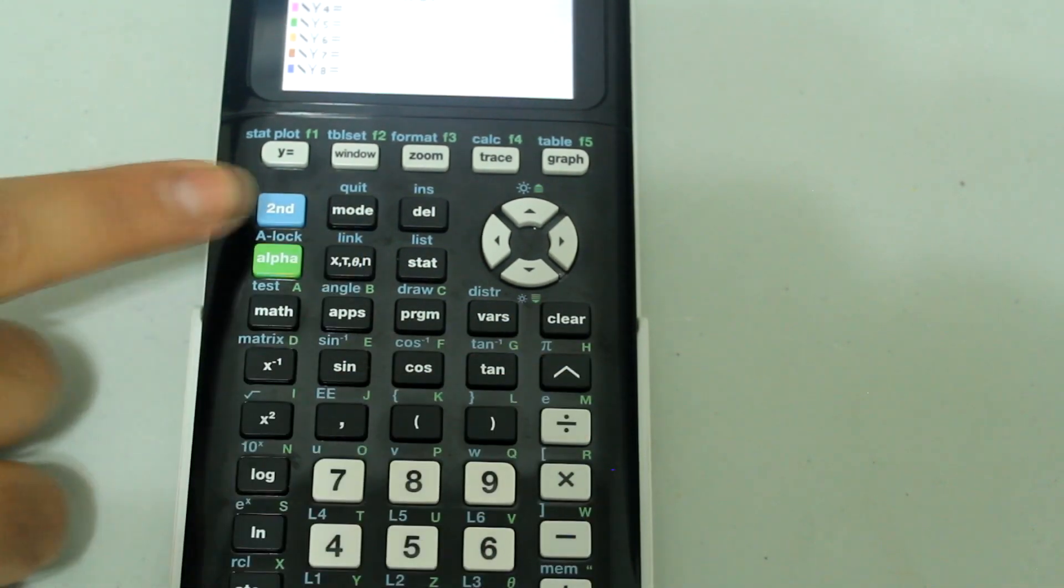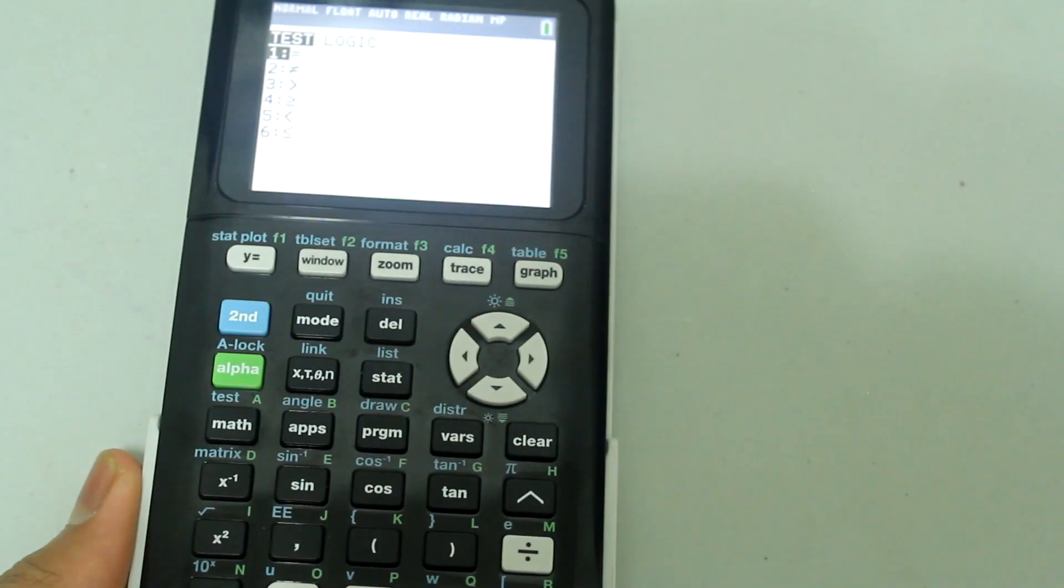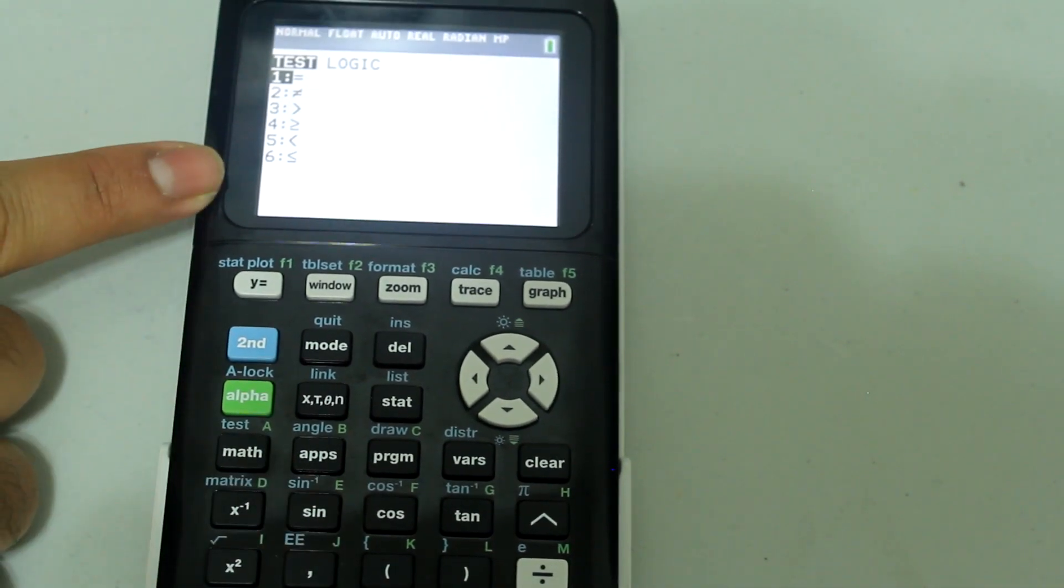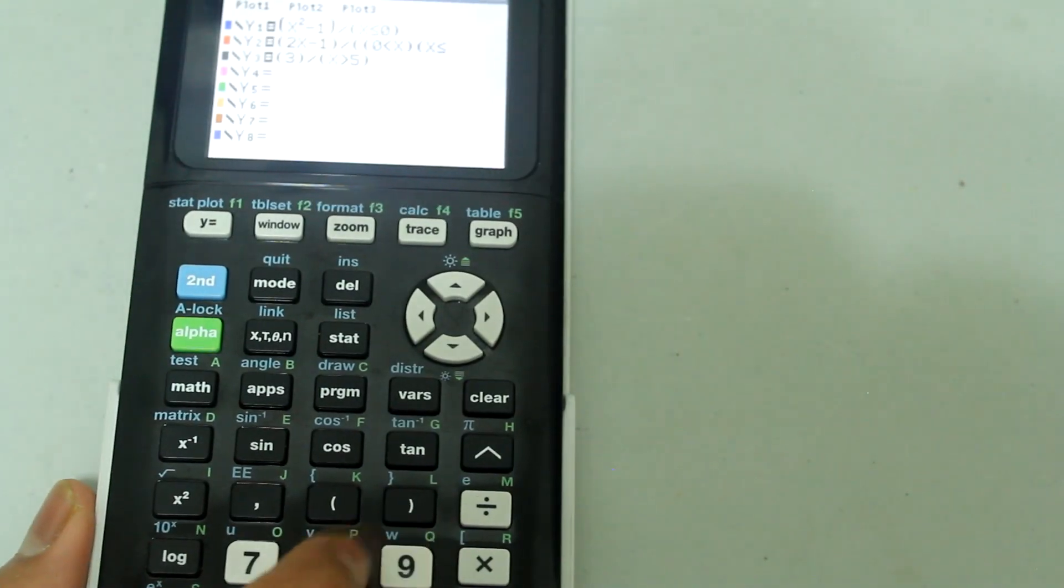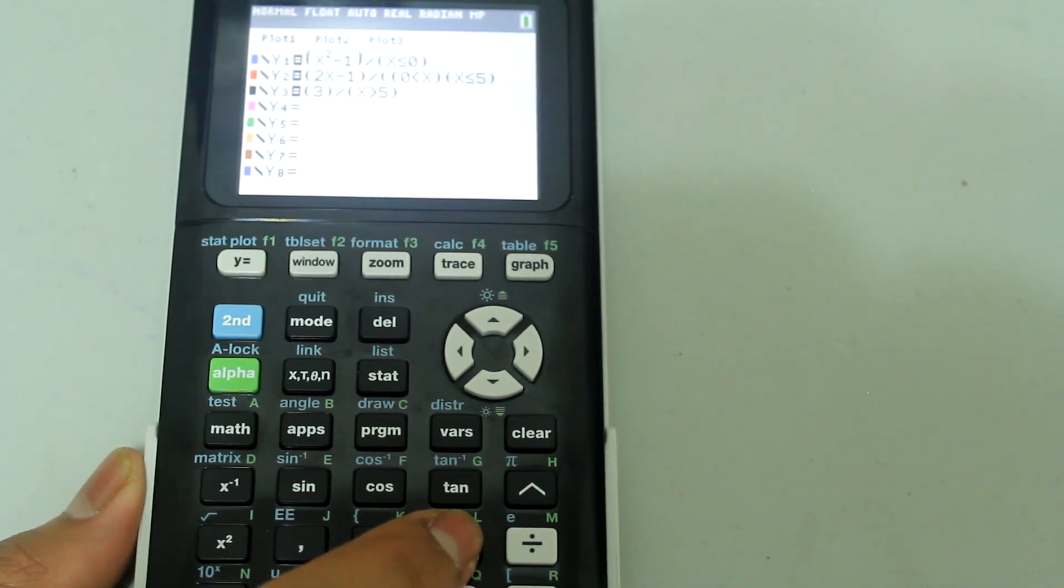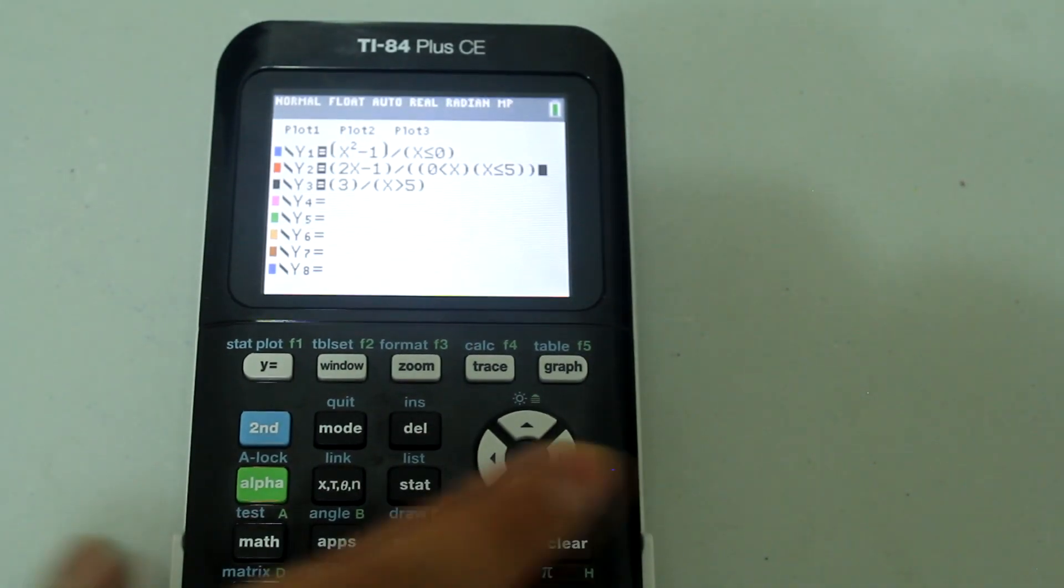And now I'm going to open another one, x, and I'm going to press second math to select test. And then I'm going to press the number 6 on the keypad. And now I'm going to type in 5, close the parenthesis, and then close the overarching big parenthesis. As you can see, so now the entry looks like this.